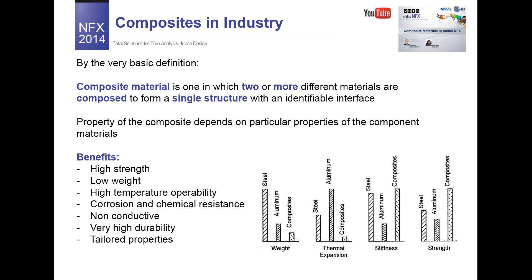The properties of a composite depend on the particular properties of the component materials, and this is why composites are very interesting for many areas of industry. The most needed combination of required parameters is high strength and low weight, and composites have both of these features at the same time. That's why they are widely used in aerospace and automotive industry, and you can encounter composites in your sports equipment. Other composite advantages are high temperature operability, corrosion and chemical resistance, non-conductivity, very high durability, and tailored properties.